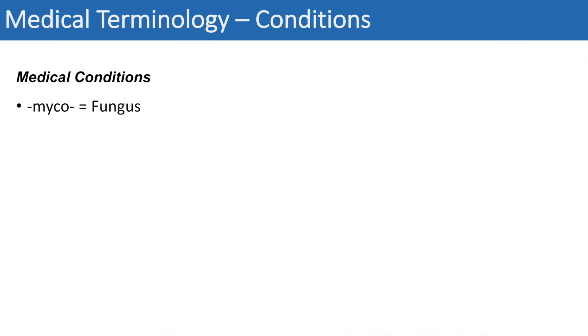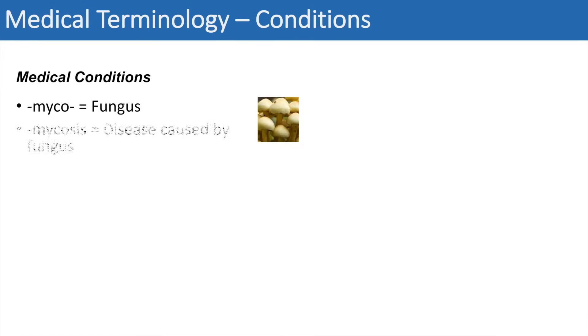Now we'll look at prefixes and suffixes concerning conditions, starting with medical conditions. The first prefix is myco — when you hear myco, you can think of fungus. You can think of a mycologist as someone that specializes in fungi, and you can think of mycosis, a disease caused by fungus — for example, onychomycosis, a nail infection caused by a fungus.